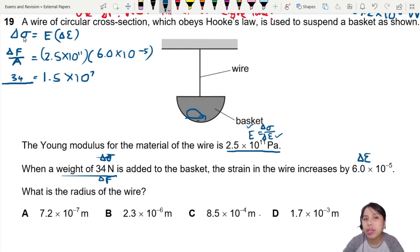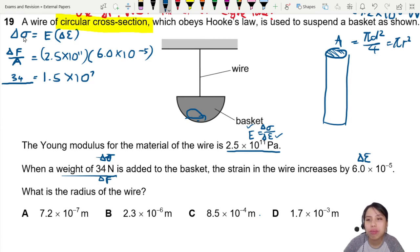Area we kind of have to assume it's a circle because they told us circular cross-section. So if this is a wire with a circular cross-section, what is this area? This area here can be written as πd²/4 or πr². Both are okay. I prefer to use diameter, but now they ask for radius, right? So we use πr².